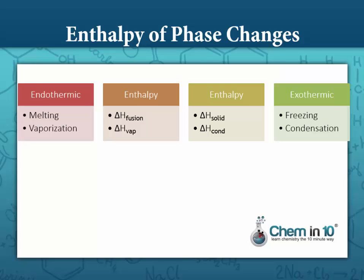When we look at our endothermic phase changes that require energy, such as melting or vaporization, the enthalpy of phase change — also called the heat of phase change or latent heat of phase change — for melting would be the latent heat of fusion, heat of fusion, or enthalpy of fusion. Delta H stands for enthalpy, which is another way of saying heat. For vaporization, it would be called the enthalpy of vaporization.